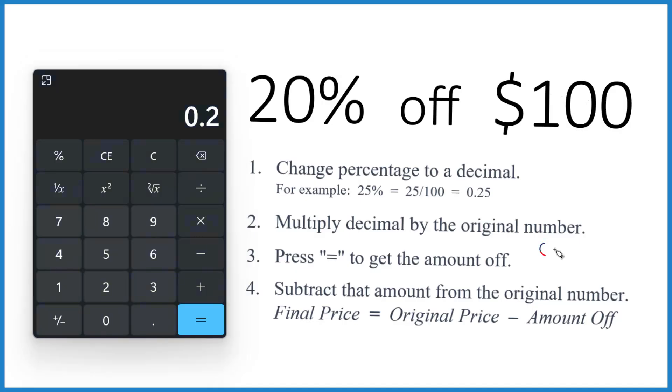So we have 0.2, that's our decimal now, and we multiply that by the original number, which is 100. So if you multiply 0.2 times 100, you get 20.